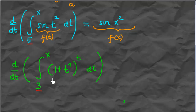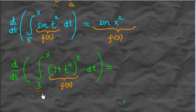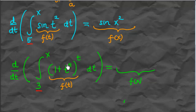For the second example, we do the same as before: first we identify what is our f(t). The theorem says the derivative of this integral will be f(x), which means we just need to replace t by x. Substituting gives 1 plus x to the 4th, raised to x.